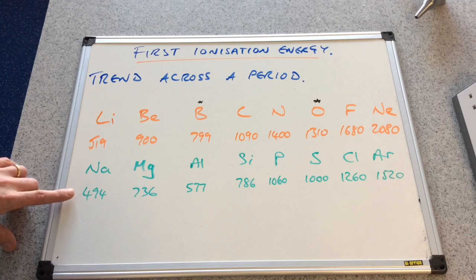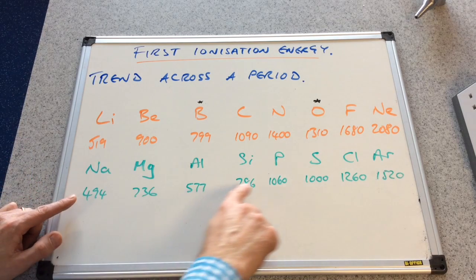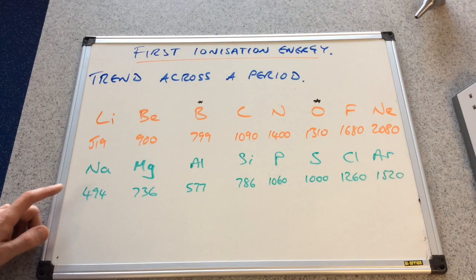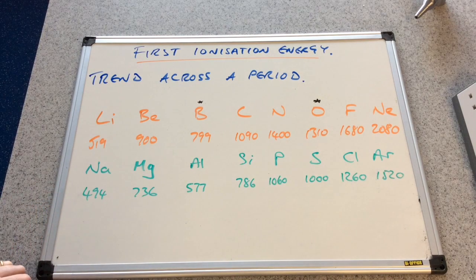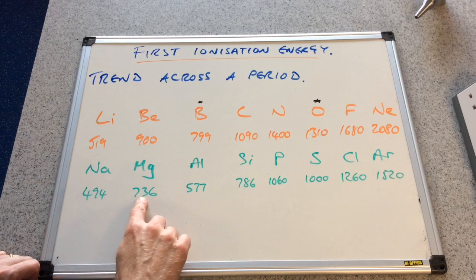So again, we've got the same trend, the general trend. We're going up in first ionisation energies. It's getting harder to remove the outermost electron. And you can see it's going up.